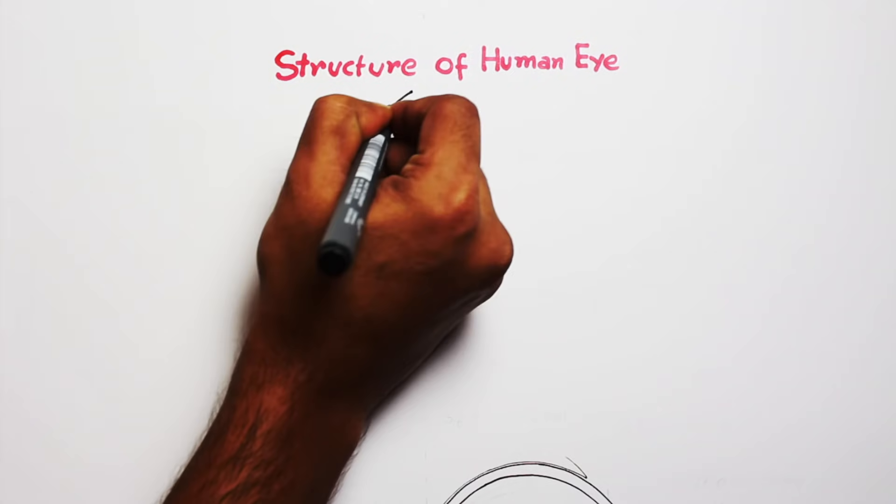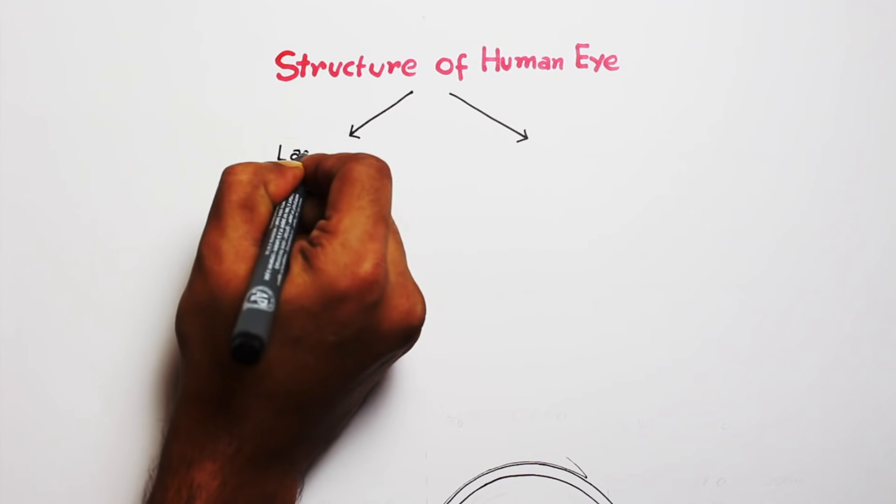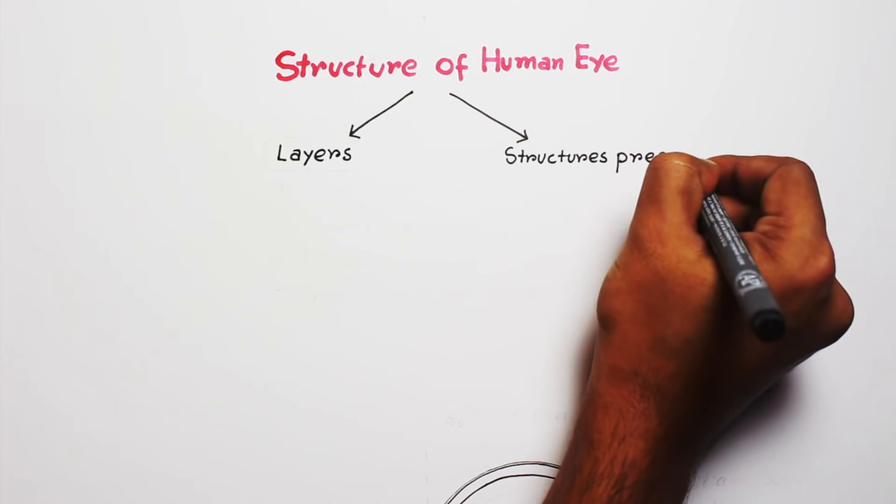For better understanding, we can divide it into two parts: the walls or layers of the eyeballs and the structures present inside.